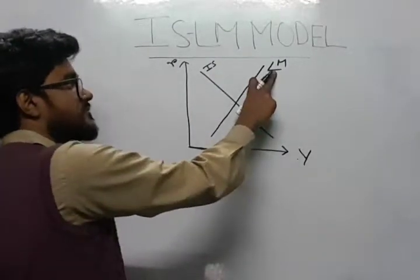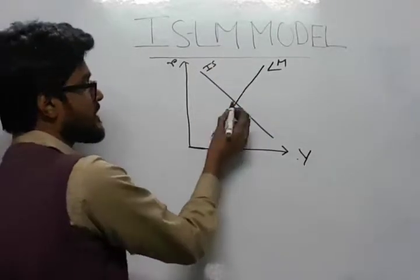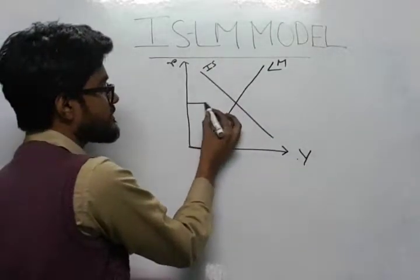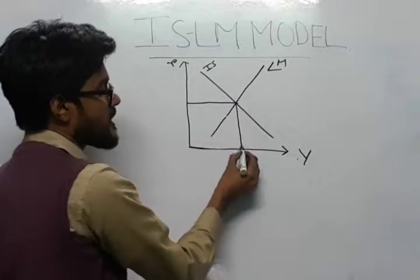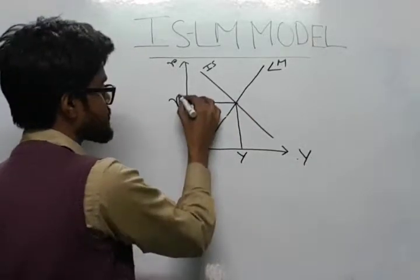When they intersect we get the general equilibrium level of output and interest rate.